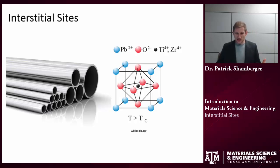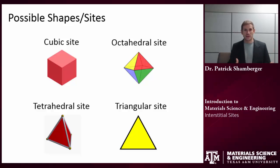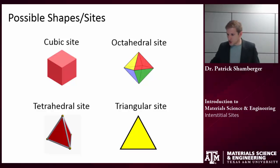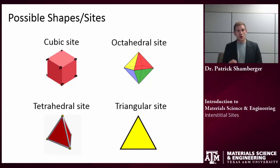The first thing I need to think about when talking about interstitial sites is: what are the possible shapes or sites that I should consider? There are four basic ones to know. The first is the cubic site. If I think about a cube with a hard spherical atom at each of the corners, there's going to be a hole in the very center of that cube — and that is the cubic site.